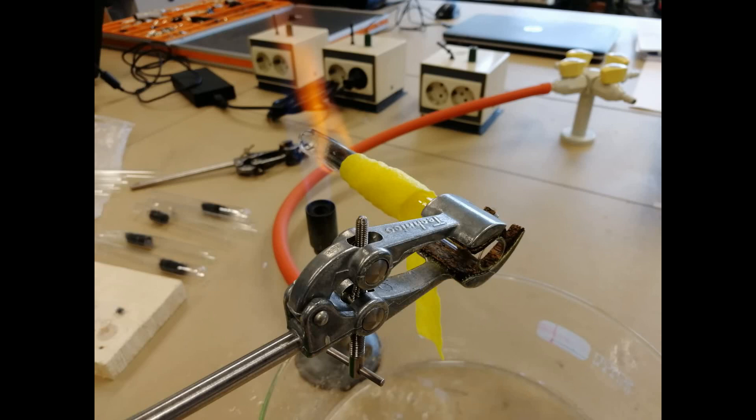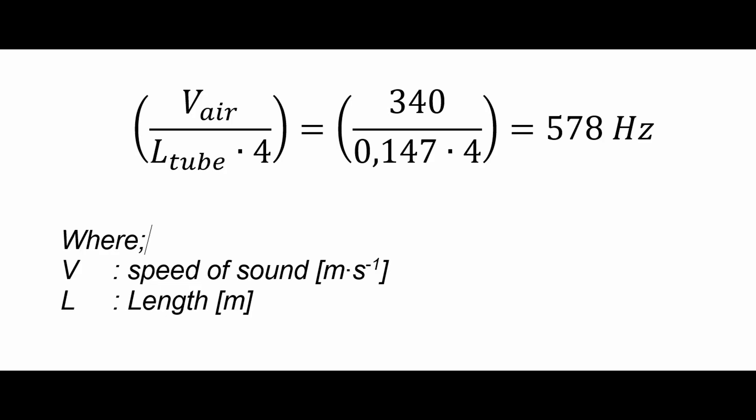The length of the test tube is 14.7 centimeters and a closed tube is known to have a resonant frequency equal to one fourth of the wavelength. With this information the resonant frequency of the system can be determined by this equation.